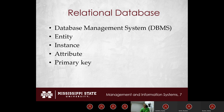Entities are like the noun, and attributes are more like adjectives for that noun. We also want to have primary keys, which allow us to uniquely identify each instance of the entity — something unique to every single record within a table. For example, for a student, the primary key could be the student ID number — your MSU ID number — because every student has a unique one. A primary key is always also an attribute.